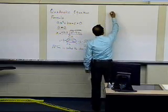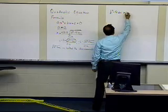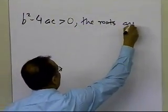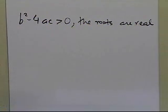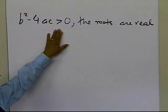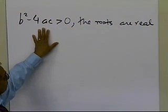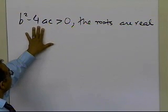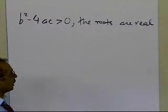If b squared minus 4ac is greater than 0, the roots are real. The reason why the roots are real is that when b squared minus 4ac is greater than 0, when you take the square root of it you'll get a positive number. It doesn't matter whether you take positive or negative, because you have plus or minus in front of that. So if b squared minus 4ac is greater than 0, the roots are real.